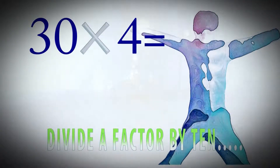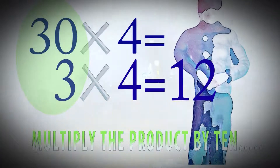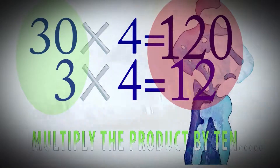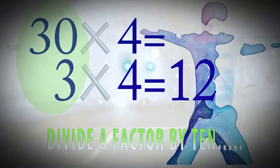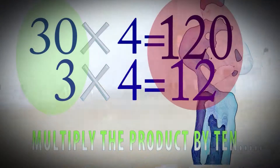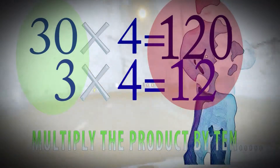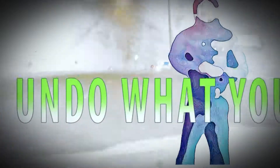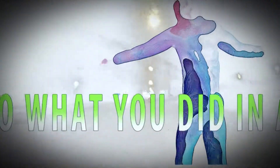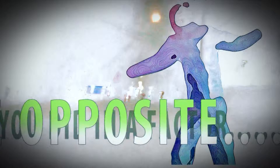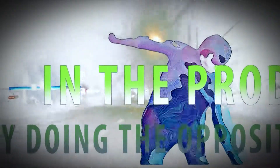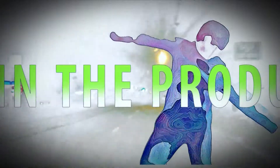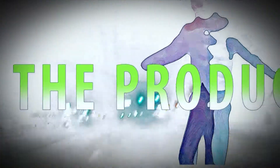Divide a factor by ten, multiply the product by ten. You can do what you did to a factor by ten by doing the opposite in the product by ten. Thank you.